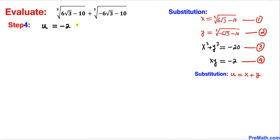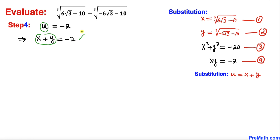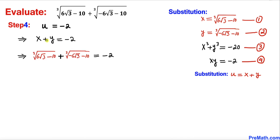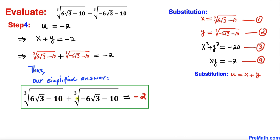Since u = −2 and we defined u = x + y, we have x + y = −2. Replacing x with the first cube root and y with the second cube root, we conclude that the cube root of (6√3 − 10) plus the cube root of (−6√3 − 10) equals −2. Thanks for watching, and please subscribe for more exciting videos!